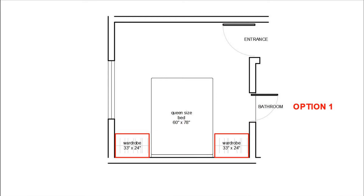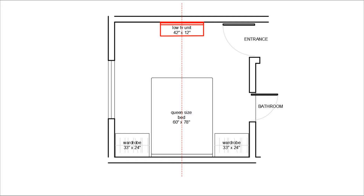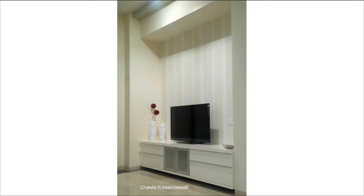If you want a TV in your bedroom, we will place it right opposite the bed. Let us assume the TV will not be more than 42 inches. So let's propose a low TV unit of 42 inches by 12 inches deep and fit the TV on the wall. The detailed designing of the TV unit we can discuss in another session.